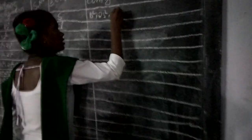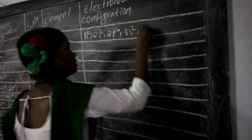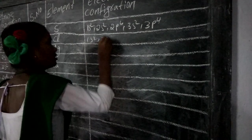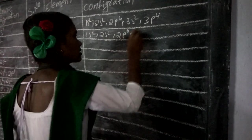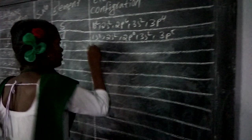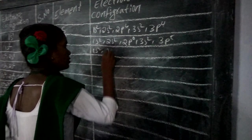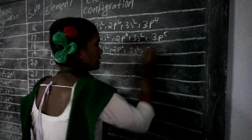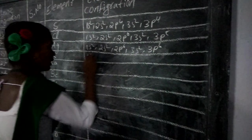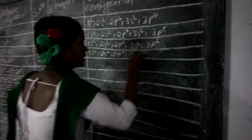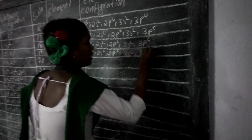1s2, 2s2, 2p6, 3s2, 3p5. 1s2, 2s2, 2p6, 3s2, 3p6.